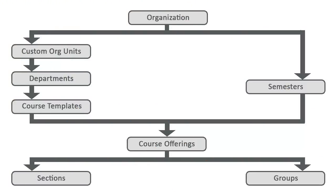This is an example of a basic org structure. The organization, department, course template, and course offering org units are required. All other org units are optional ways to define the tree structure. We will discuss each org unit individually.